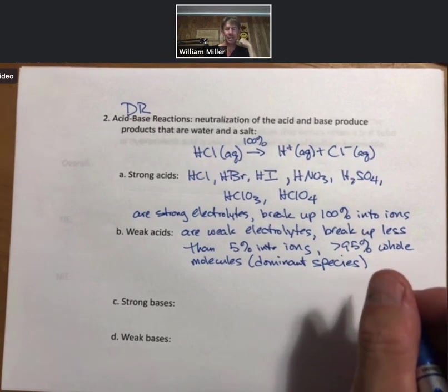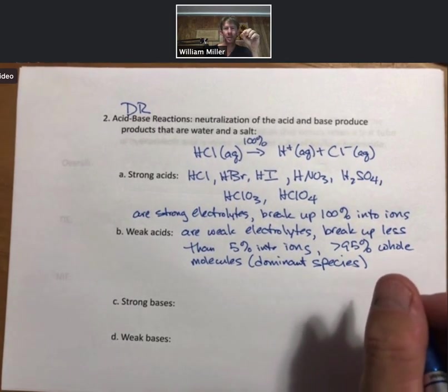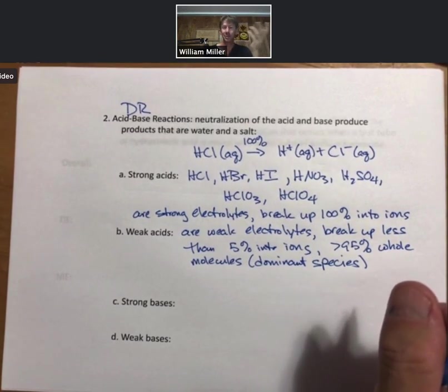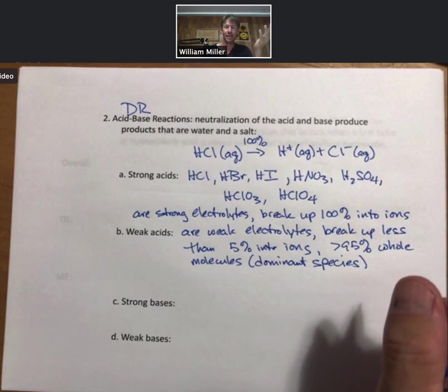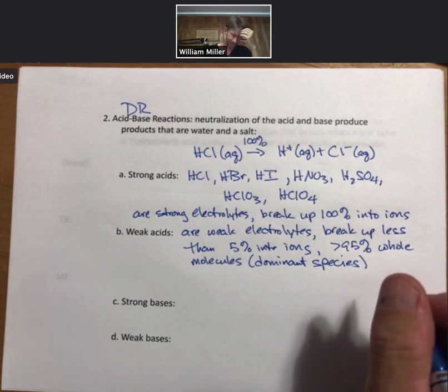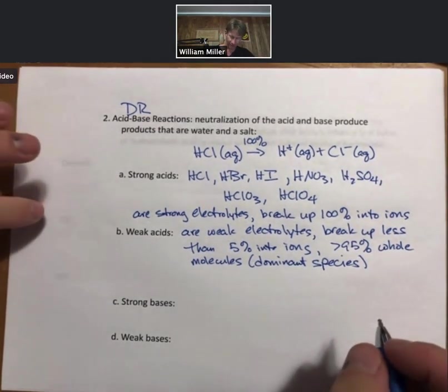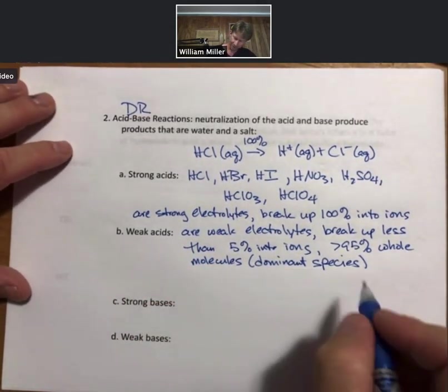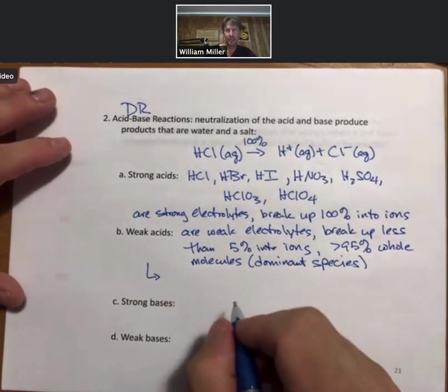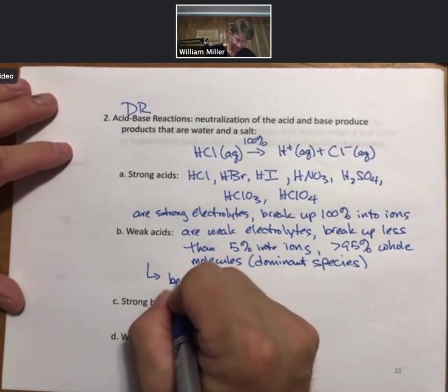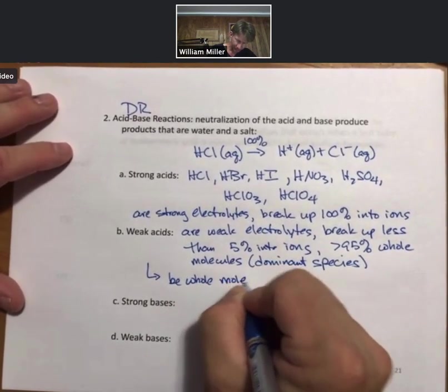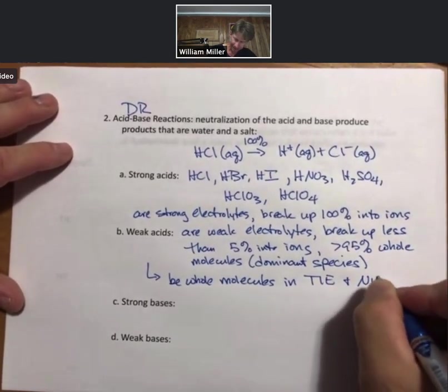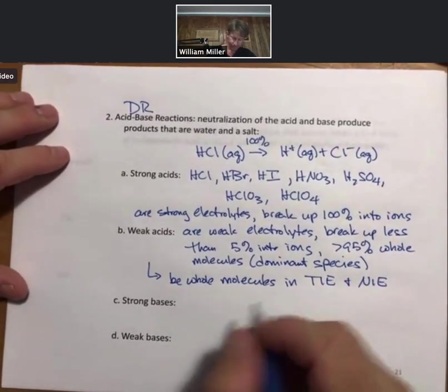That's why in my previous slide it said weak electrolytes stay together. Do not break them up into ions. That's because they don't break up into many ions at all. And it is not the dominant species. So weak acids are going to be whole molecules in TIE and NIE.